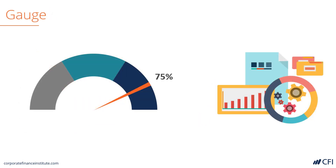Now we're going to introduce two types of advanced charts that have to be custom made in Excel. One is called a gauge chart. A gauge chart is great for showing performance relative to some target or threshold. You can imagine that there are three levels: bad, moderate, and good. In this example, 75% is on the good side of this gauge. It's really like looking at the gauges on a car — are you in the good, bad, or moderate section of performance?